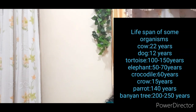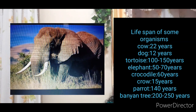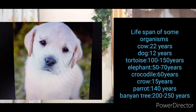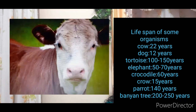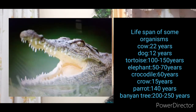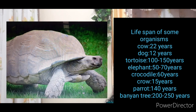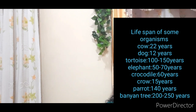Now we will discuss some lifespans of organisms. Elephant: 50 to 70 years. Dog: 15 to 22 years. Cow: 22 years. Crocodile: 60 years. Tortoise: 100 to 150 years. Banyan tree: 200 to 250 years. Crow: 15 years. Parrot: 140 years.